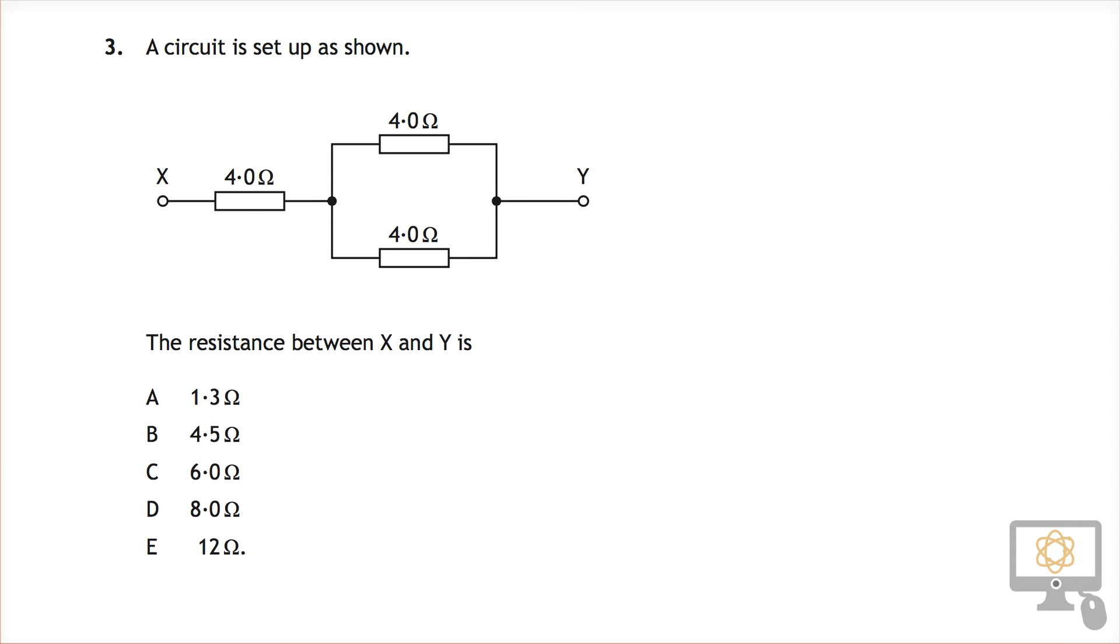Let's have a look at question 3 from the 2015 National 5 Physics paper. It says that there is a circuit set up as shown, and between X and Y there are a number of resistors. These two 4-ohm resistors are in parallel, and this resistor is connected in series with these resistors.